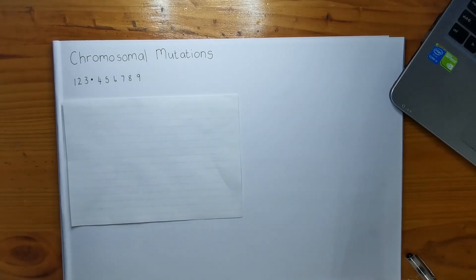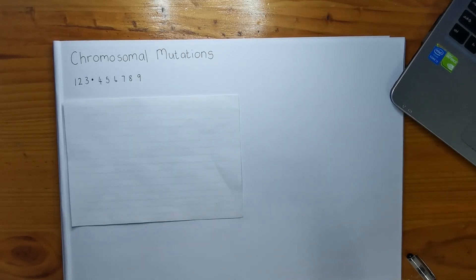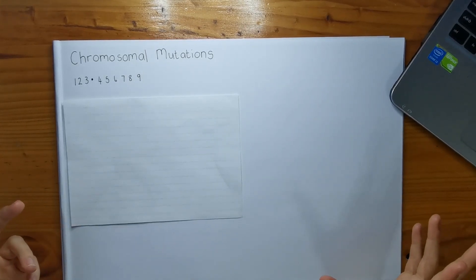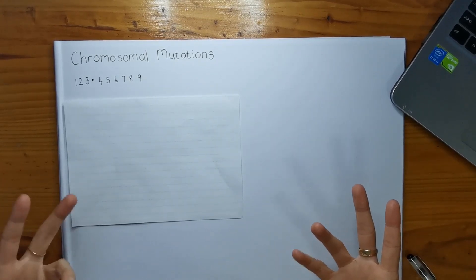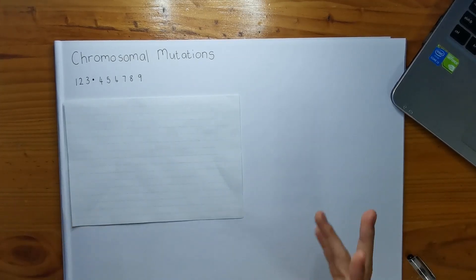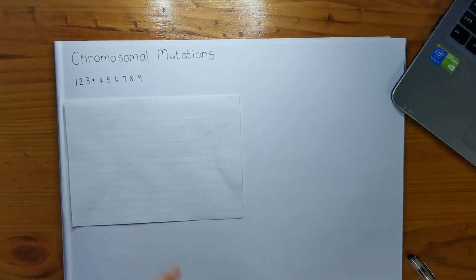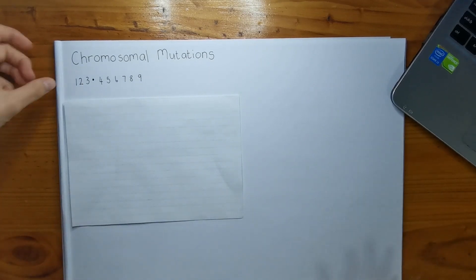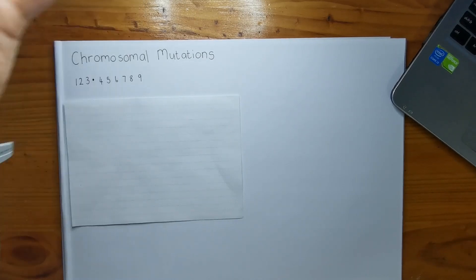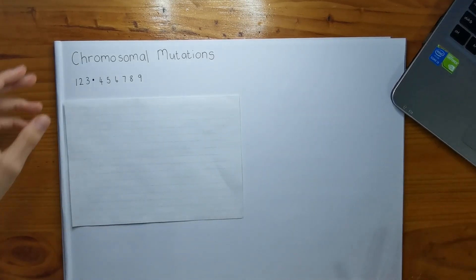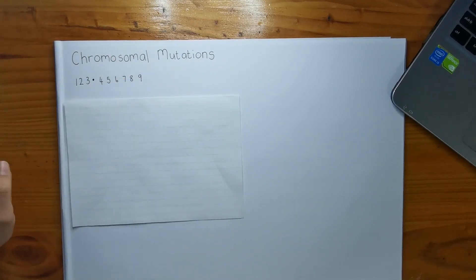So you guys pause the video now and give it a read. Hopefully you've done that and you've realized what the question wants - they want you to say what type of mutation is occurring, as well as drawing the diagram of these two chromosomes pairing up during meiosis where they exchange genetic material during crossing over. So in order to do that, I wrote out the normal sequence of the chromosome. Each number corresponds to a different gene or a different segment. I've got it one to nine and the little dot is my centromere.